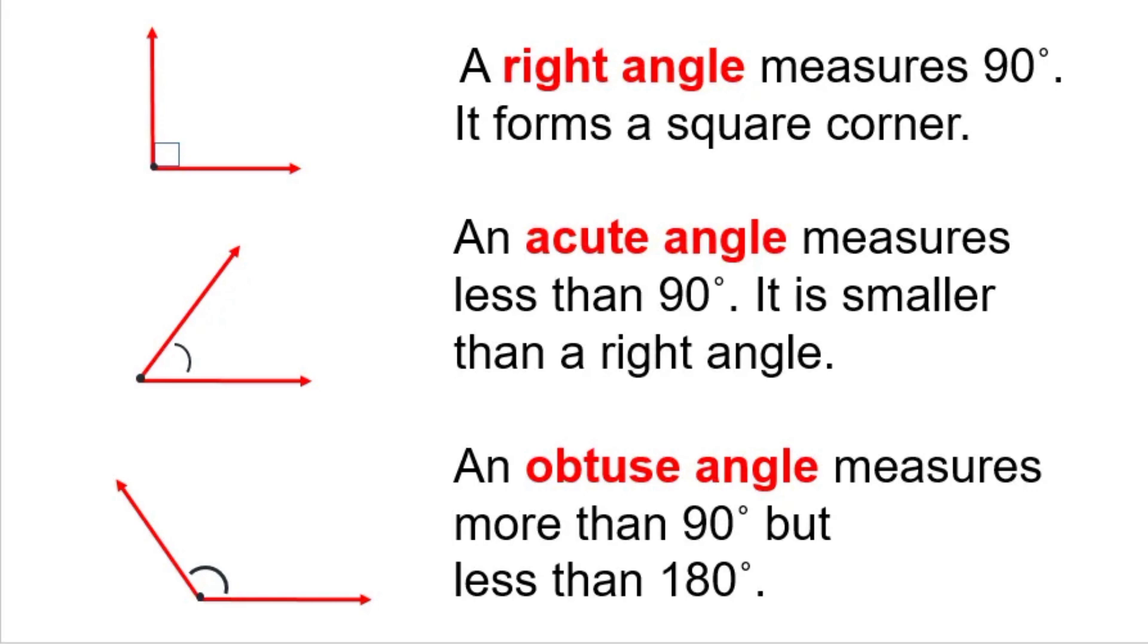Next we have acute angle. It measures less than 90 degrees. It is smaller than a right angle.